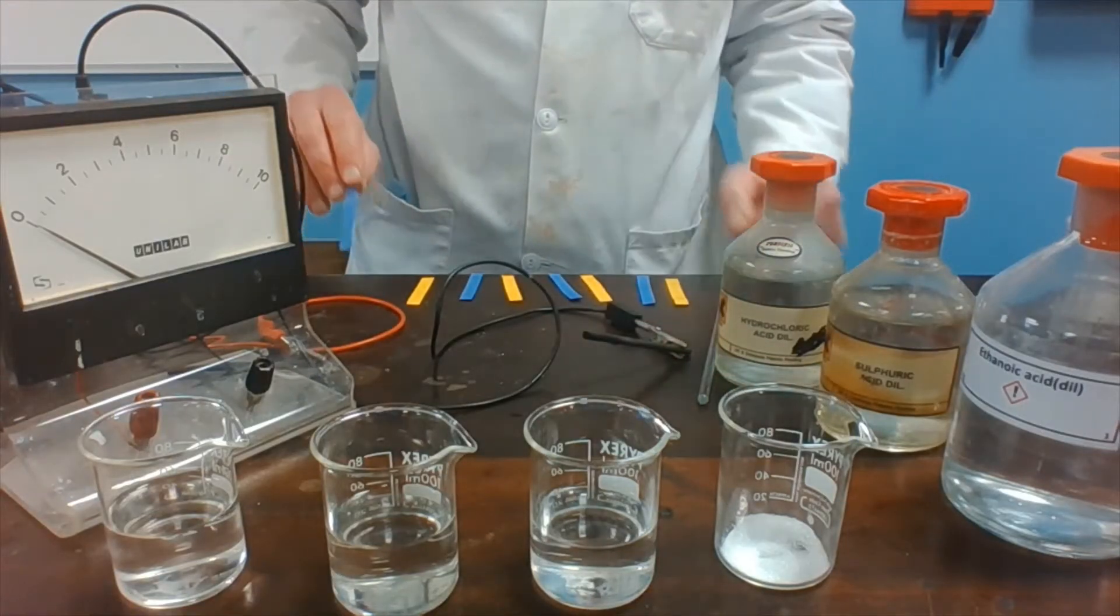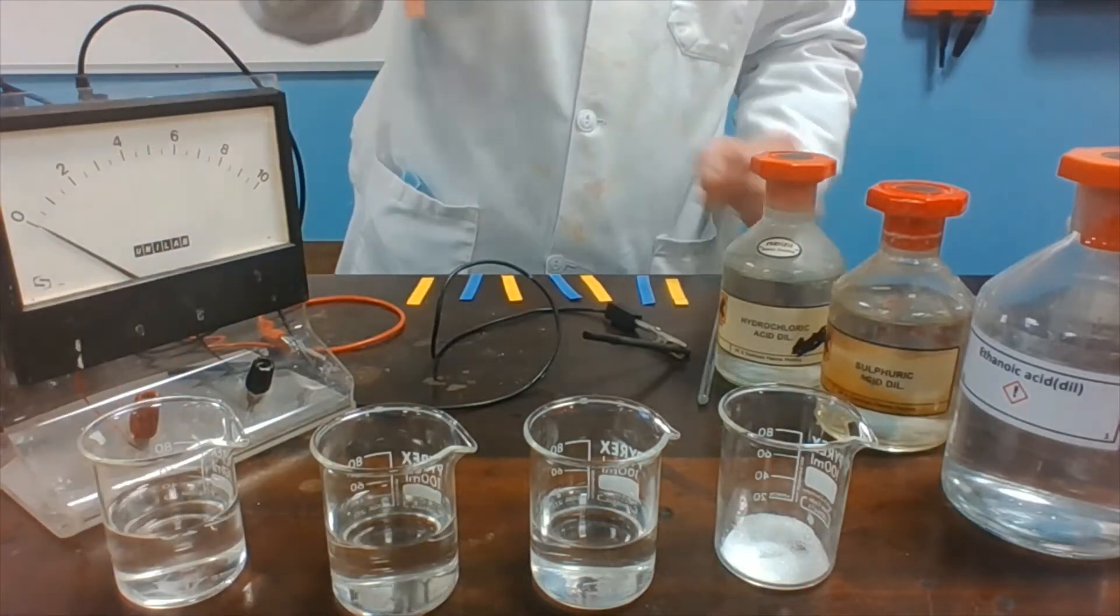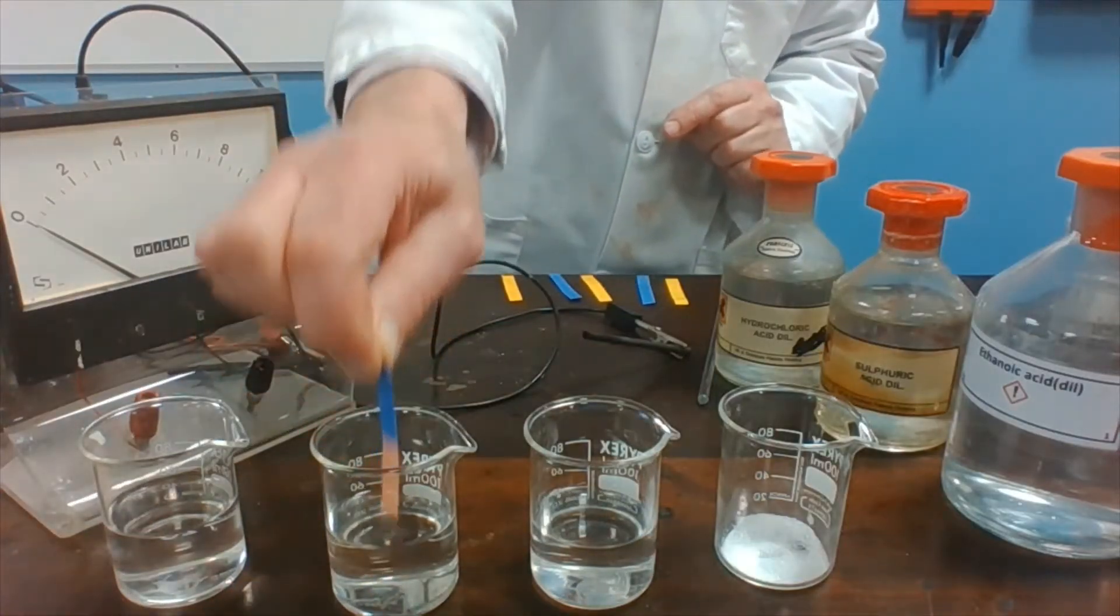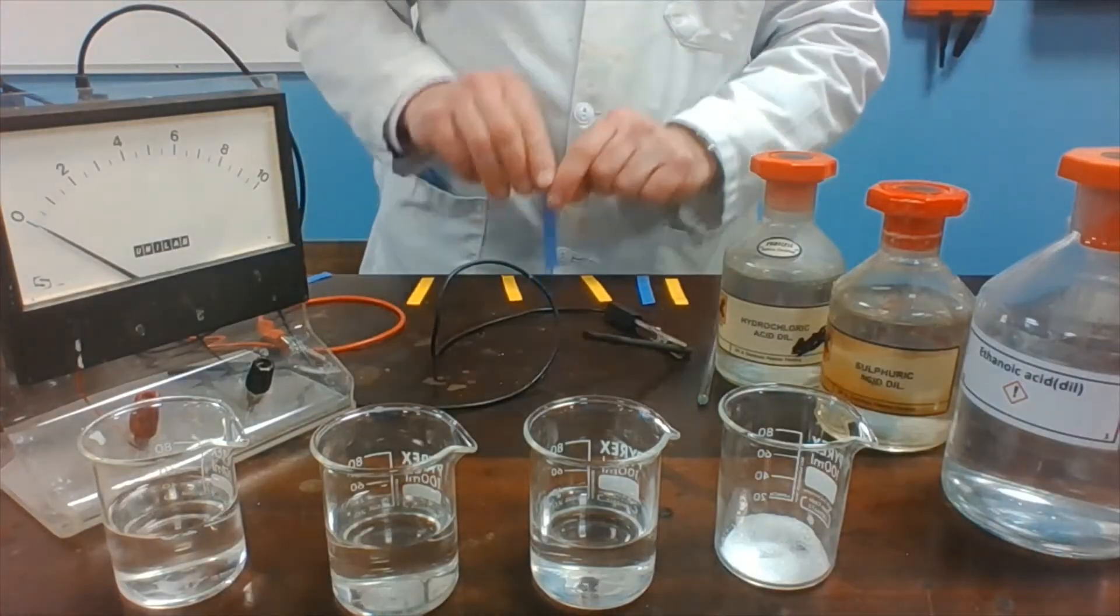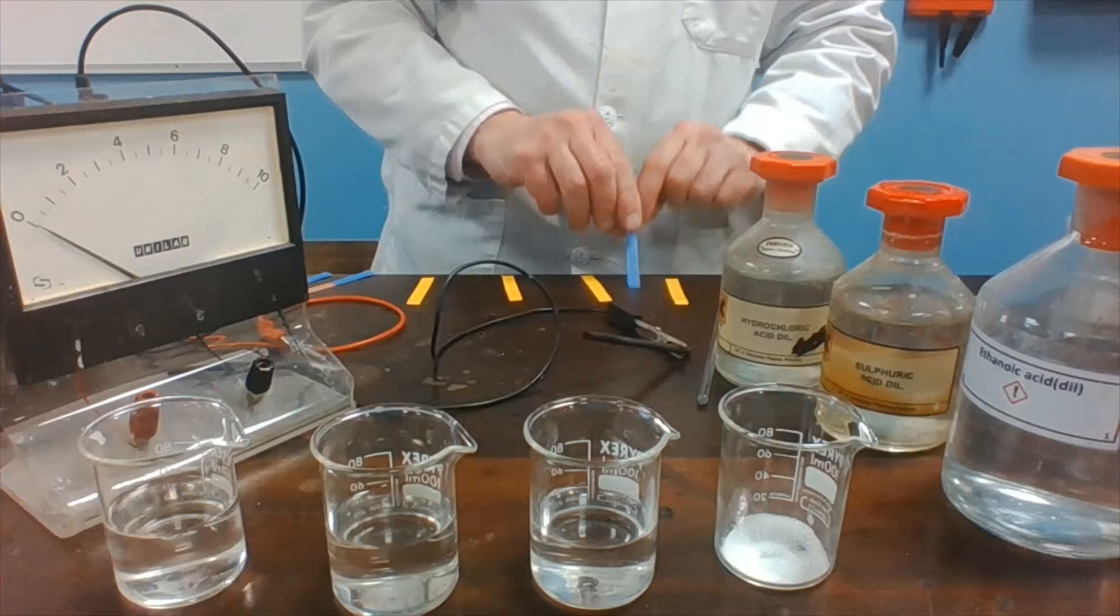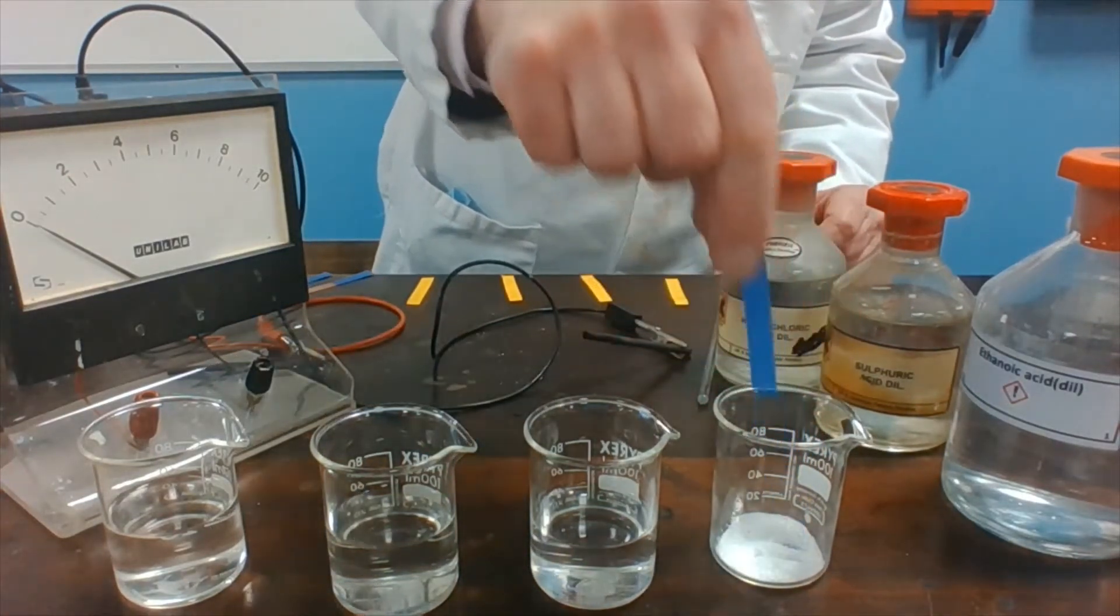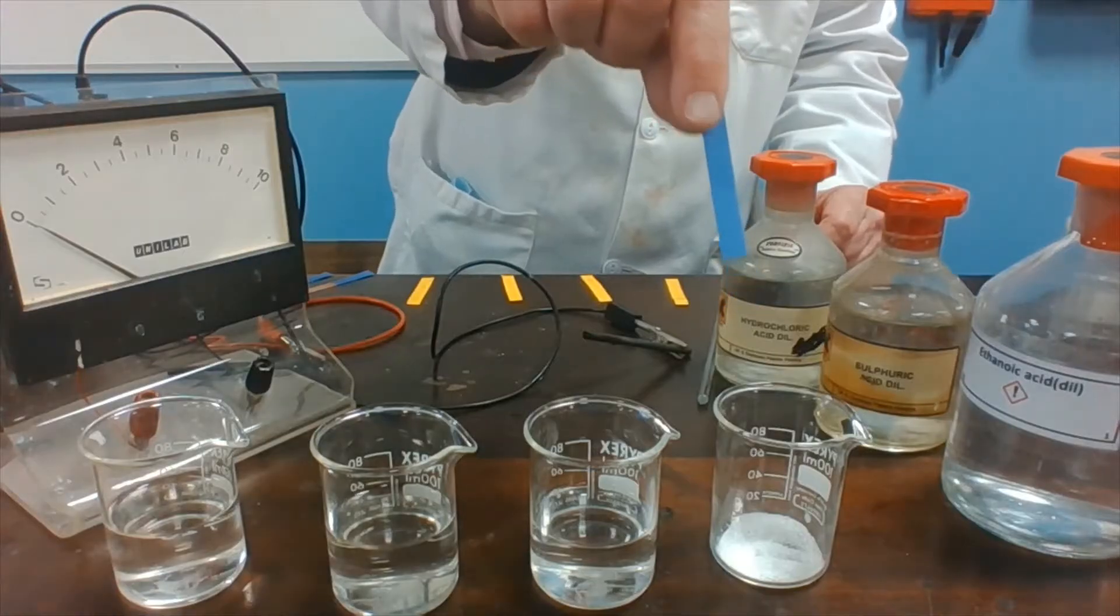If I test these solutions with blue litmus paper, it turns red. The sulfuric acid turns red. The ethanoic acid turns red. The citric acid has no effect on the blue litmus paper.